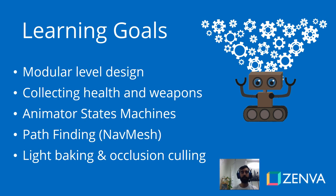We're going to cover how to create state machines in the animator, which we'll use for the swinging of the weapon. And the enemies will be using artificial intelligence to find you in the dungeon, so we'll be using the nav mesh component of Unity.